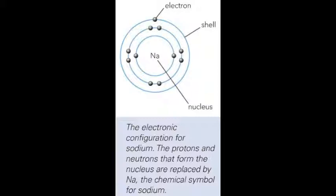Electrons are arranged in shells around the nucleus of an atom. Each shell is shown as a circle drawn around the chemical symbol for the atom. The way in which the electrons are arranged in an atom is called its electronic configuration or electron structure. This picture shows the electronic configuration for sodium.